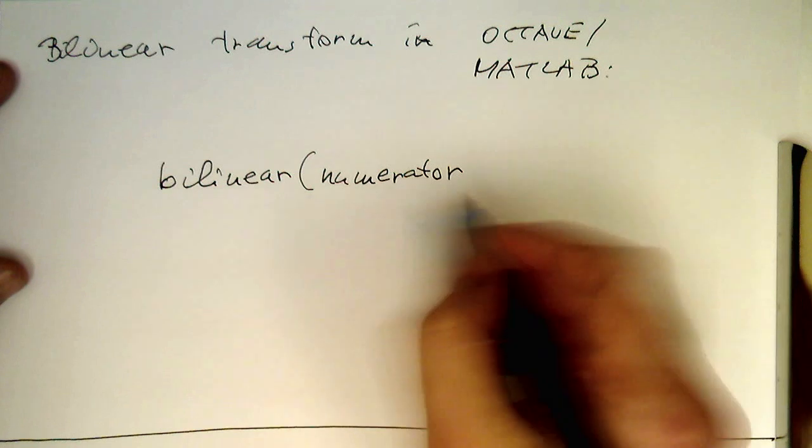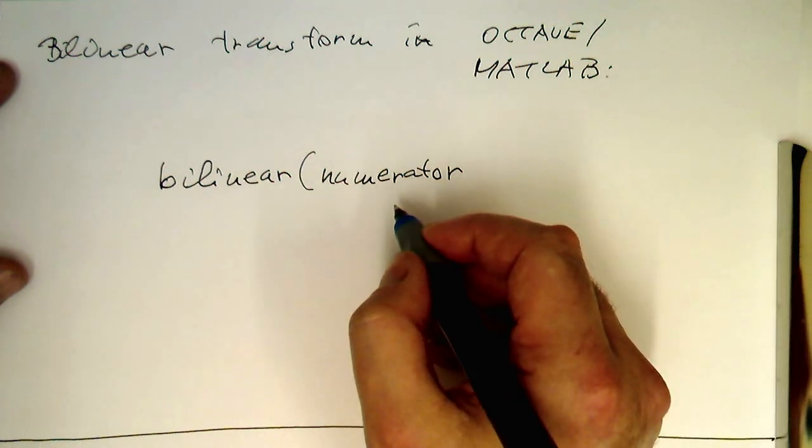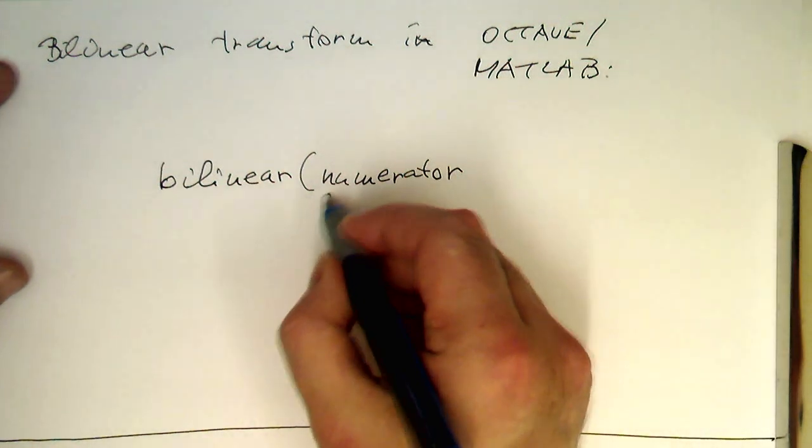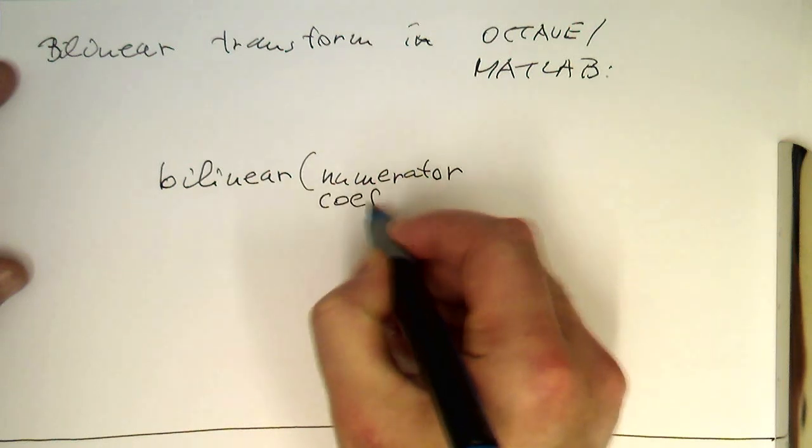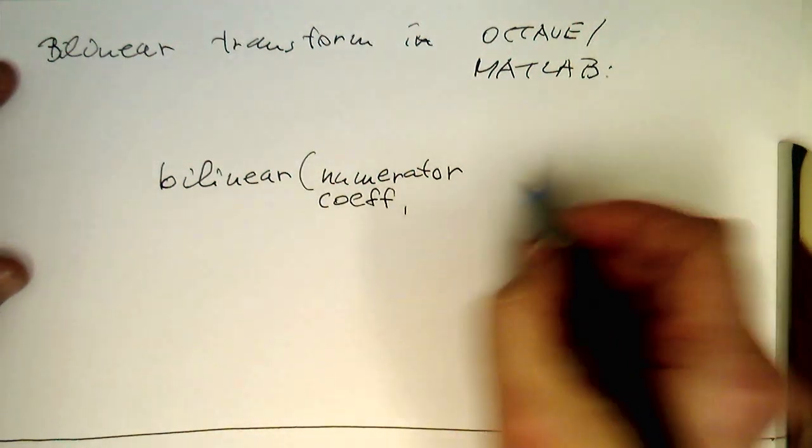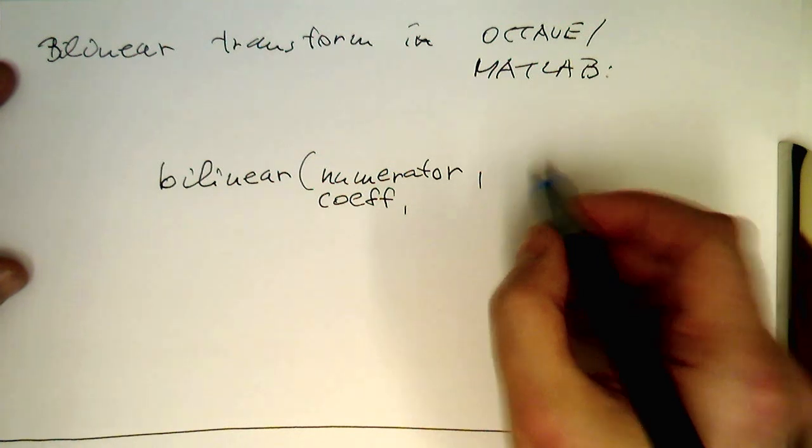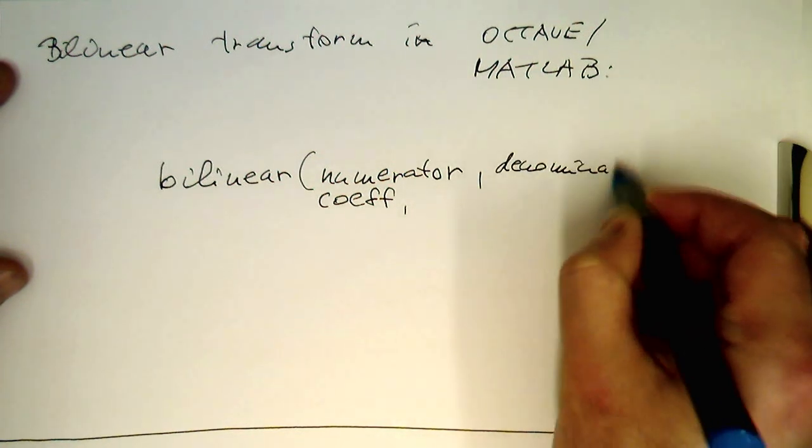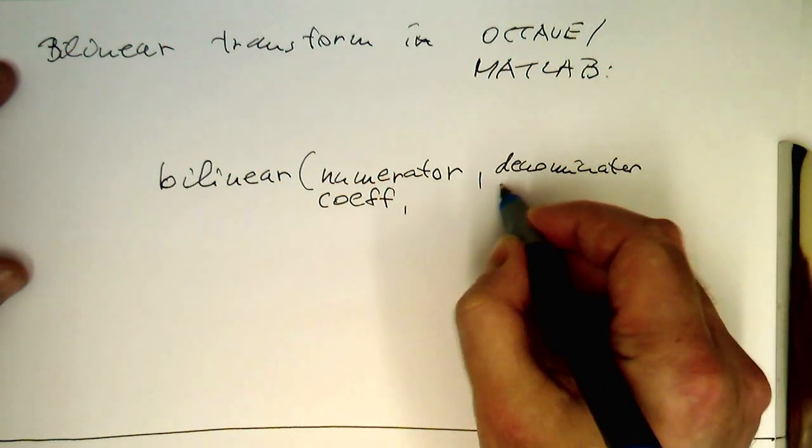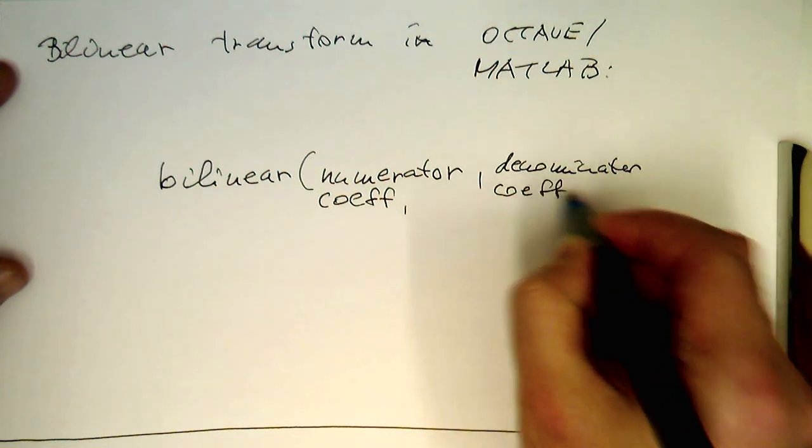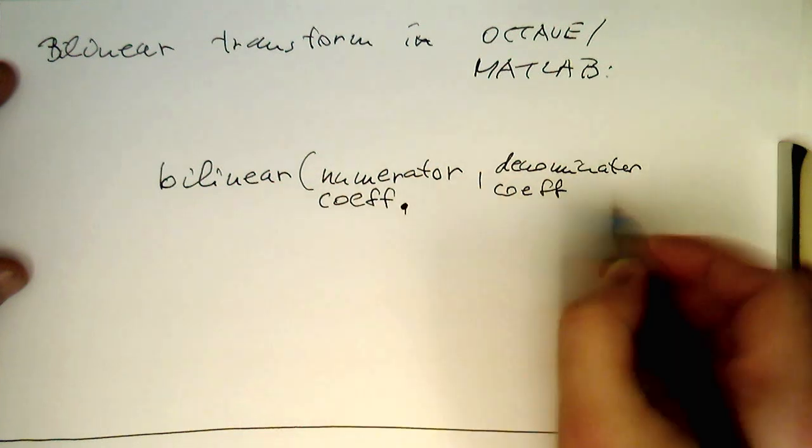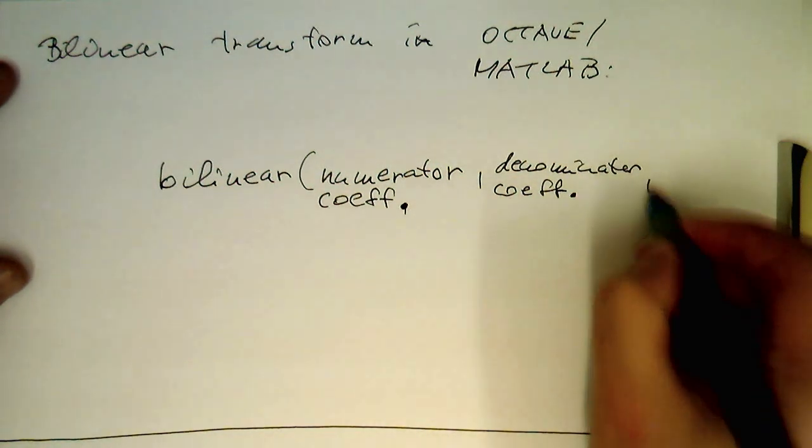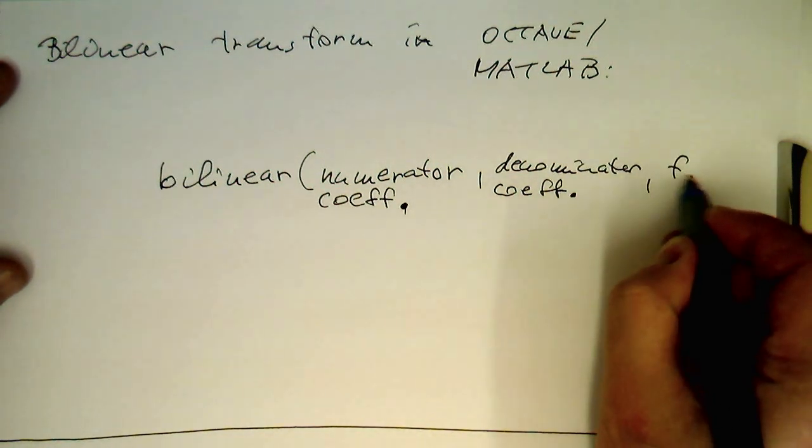This takes three arguments: numerator coefficients, comma, and then denominator coefficients, and then comma, fs.